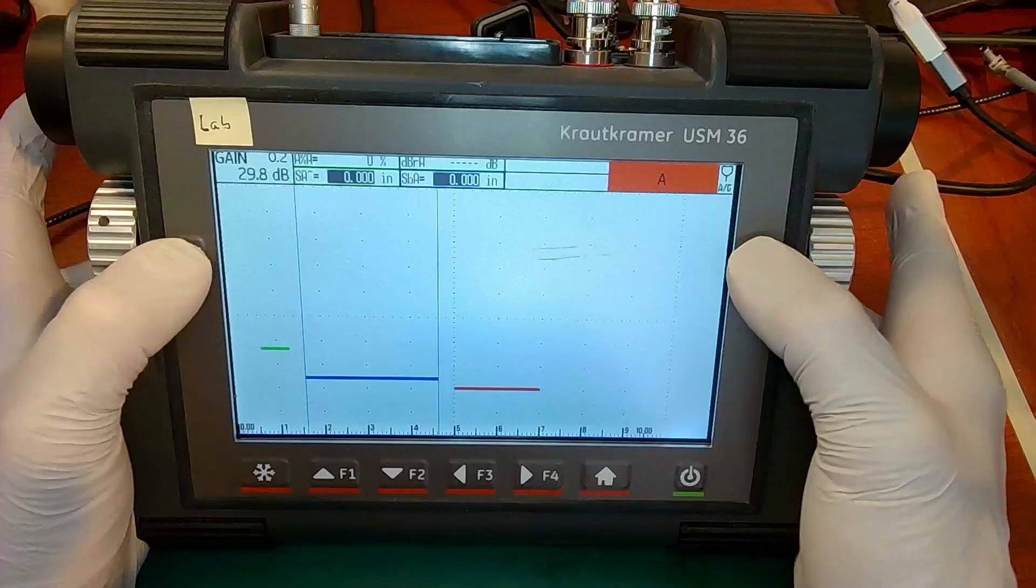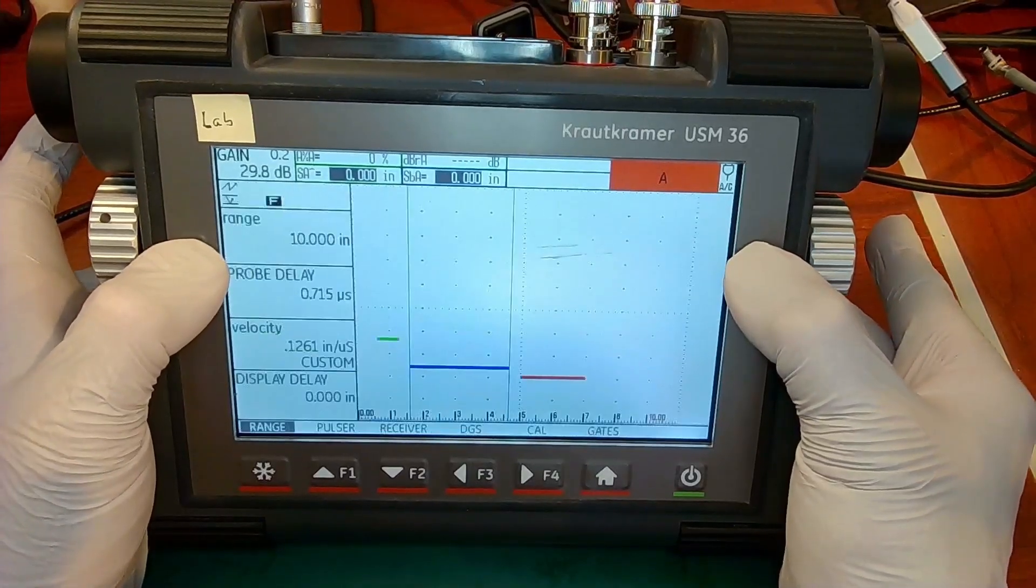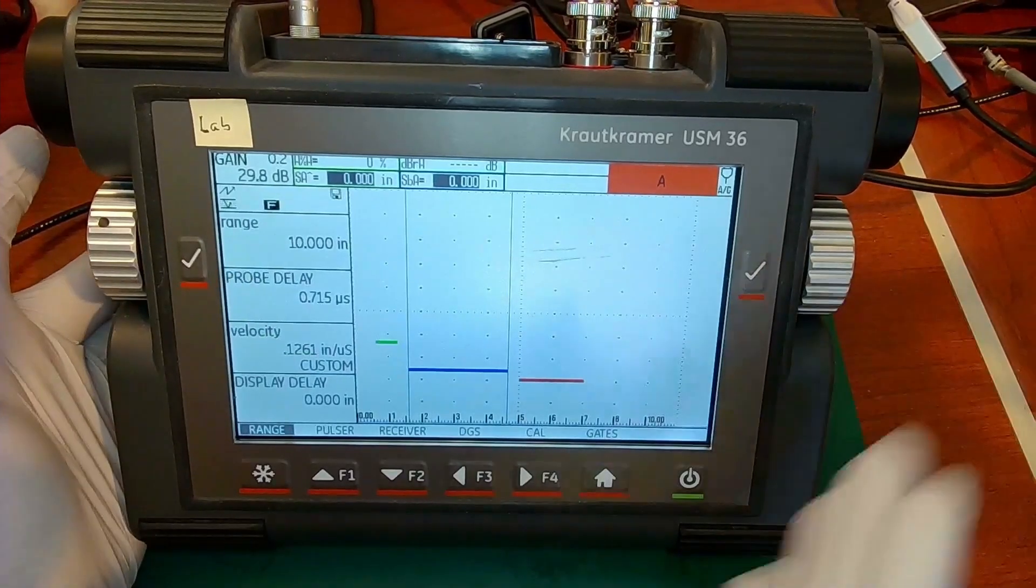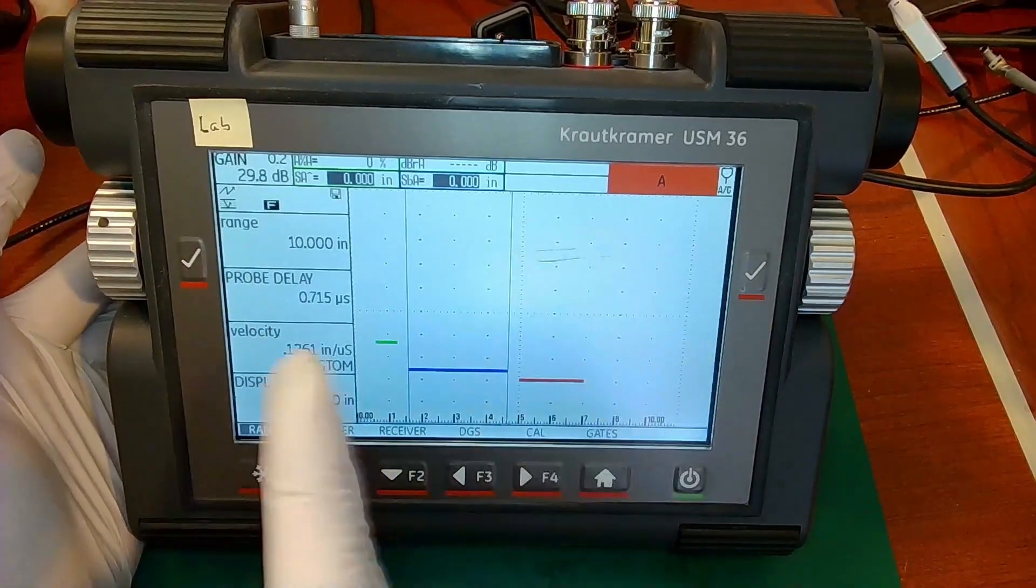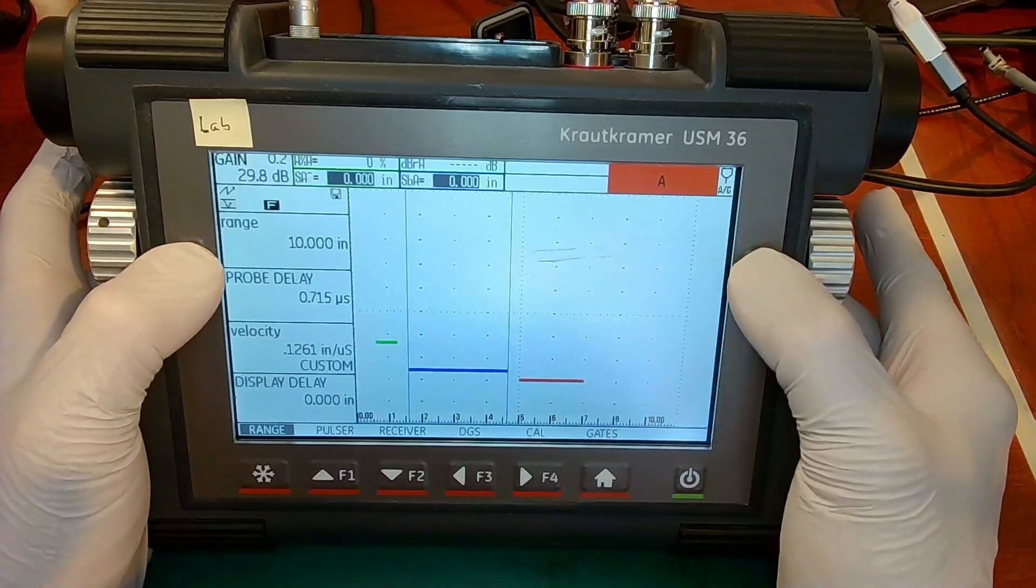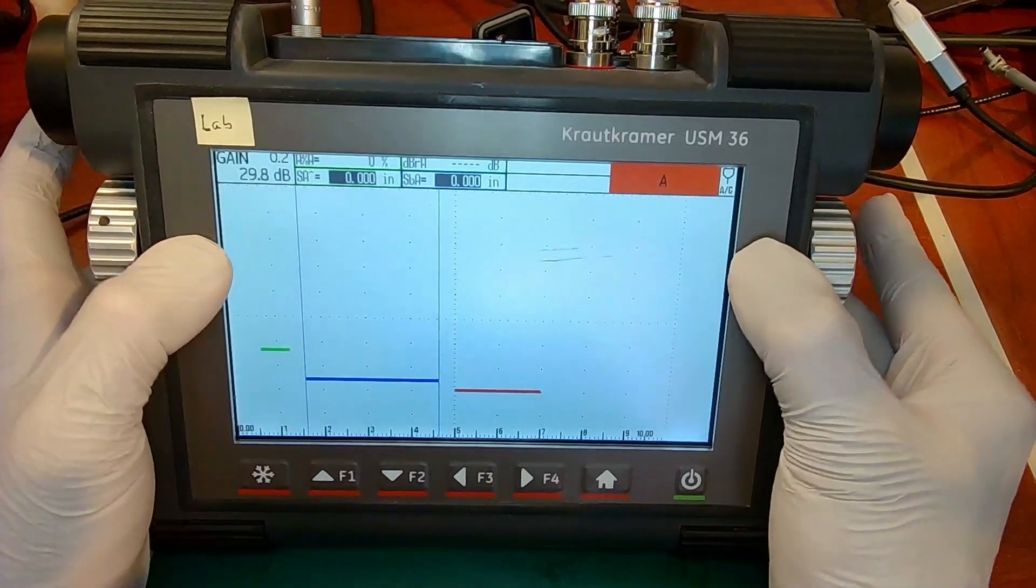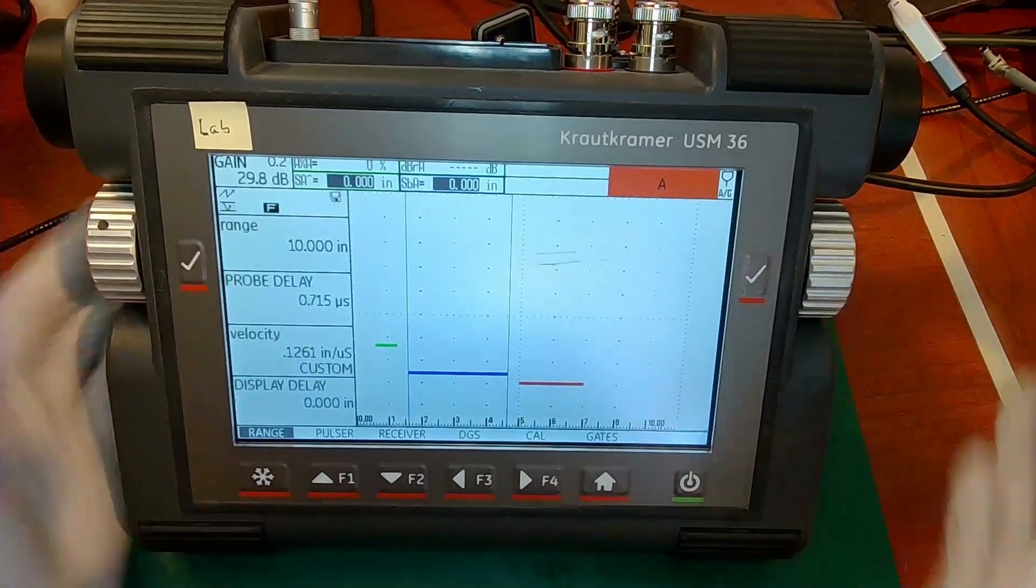If I press both check marks again, and it's a press and hold, you need to press and hold them both, but that will bring the menus back. The A-scan gets a little smaller. So again, press and hold full screen, press and hold back to normal.